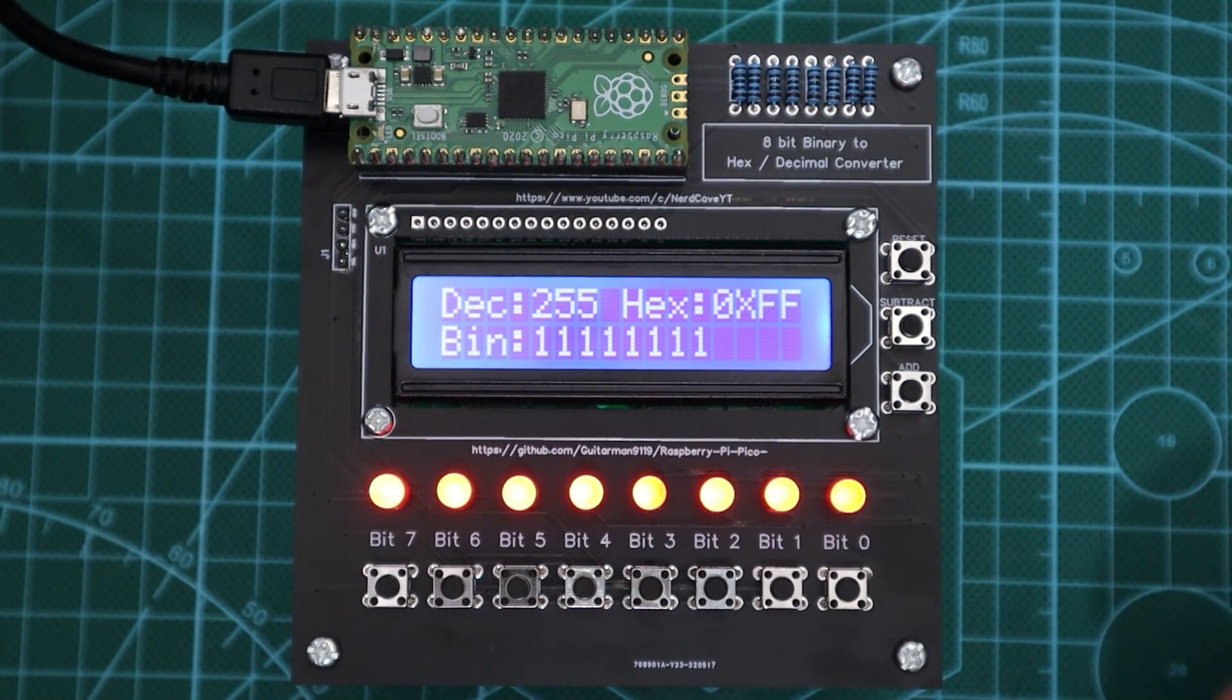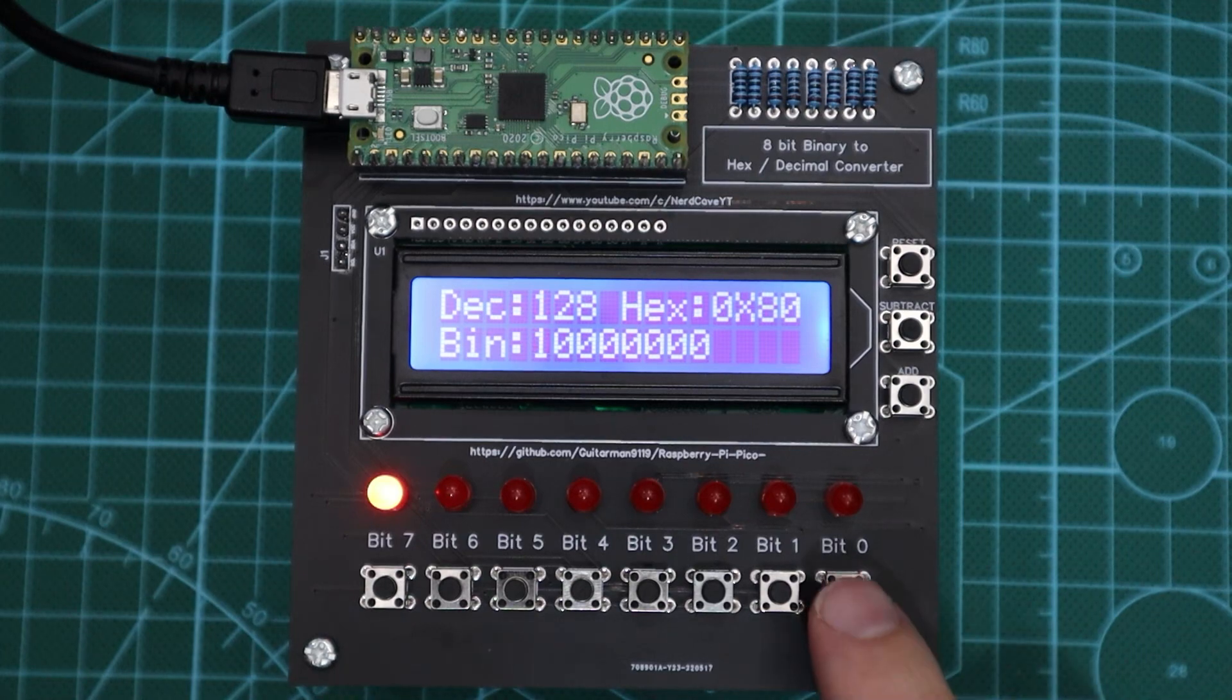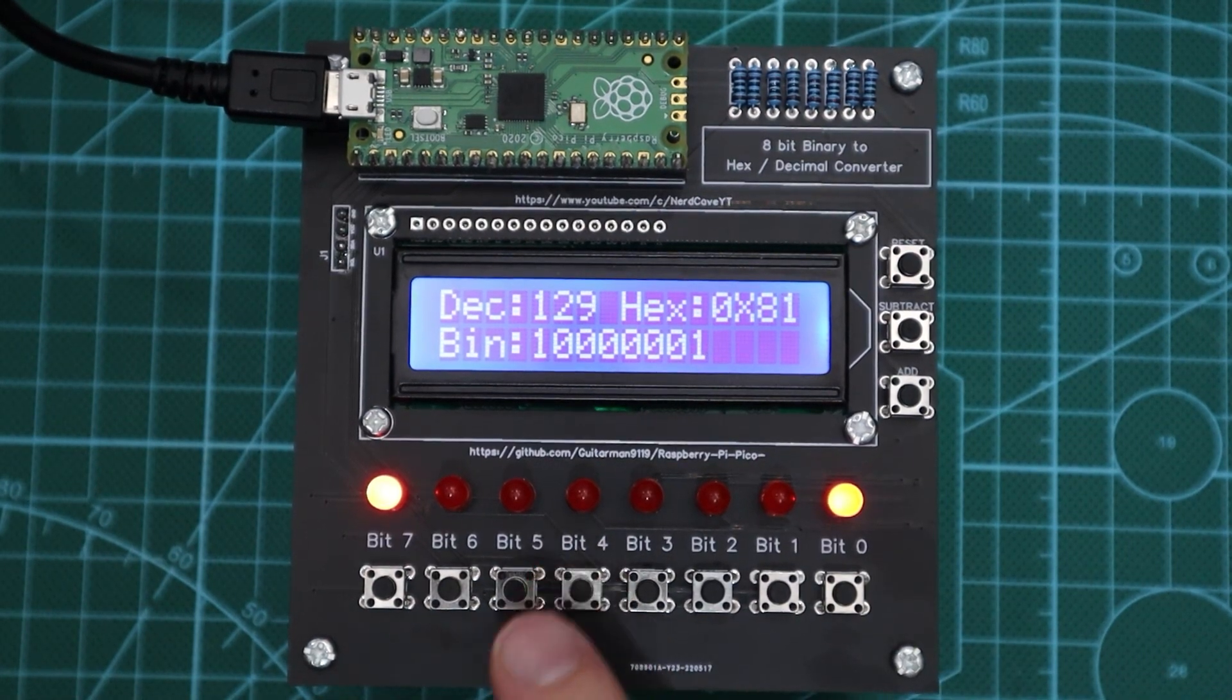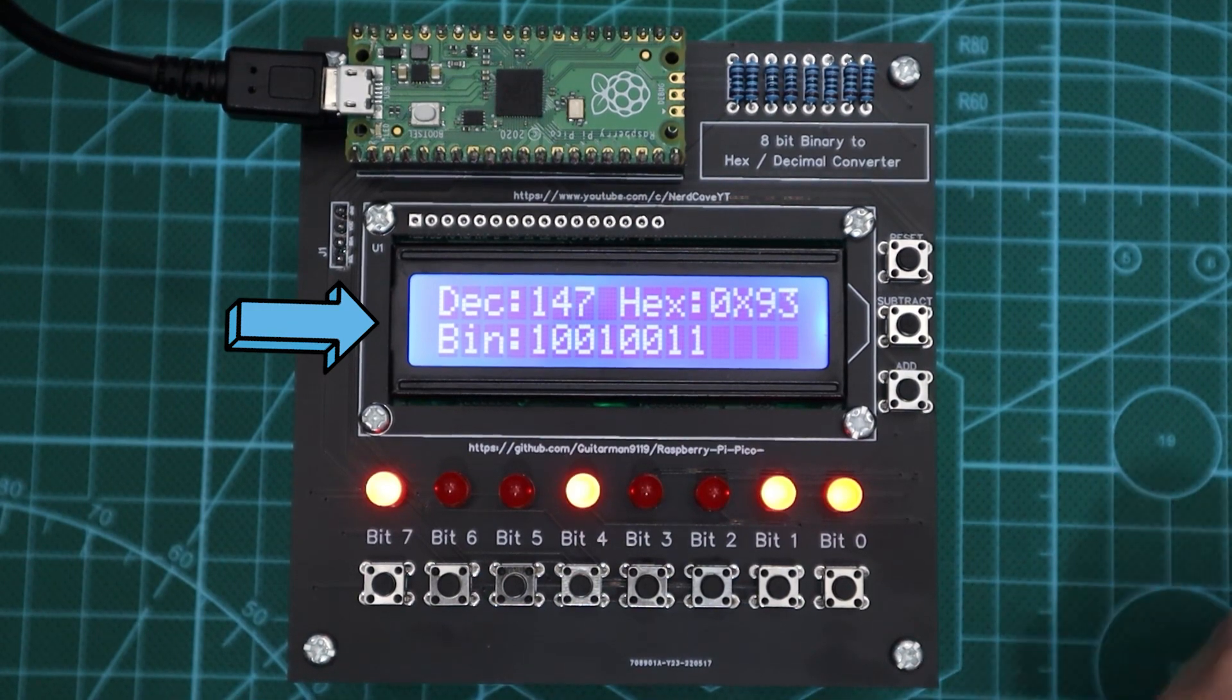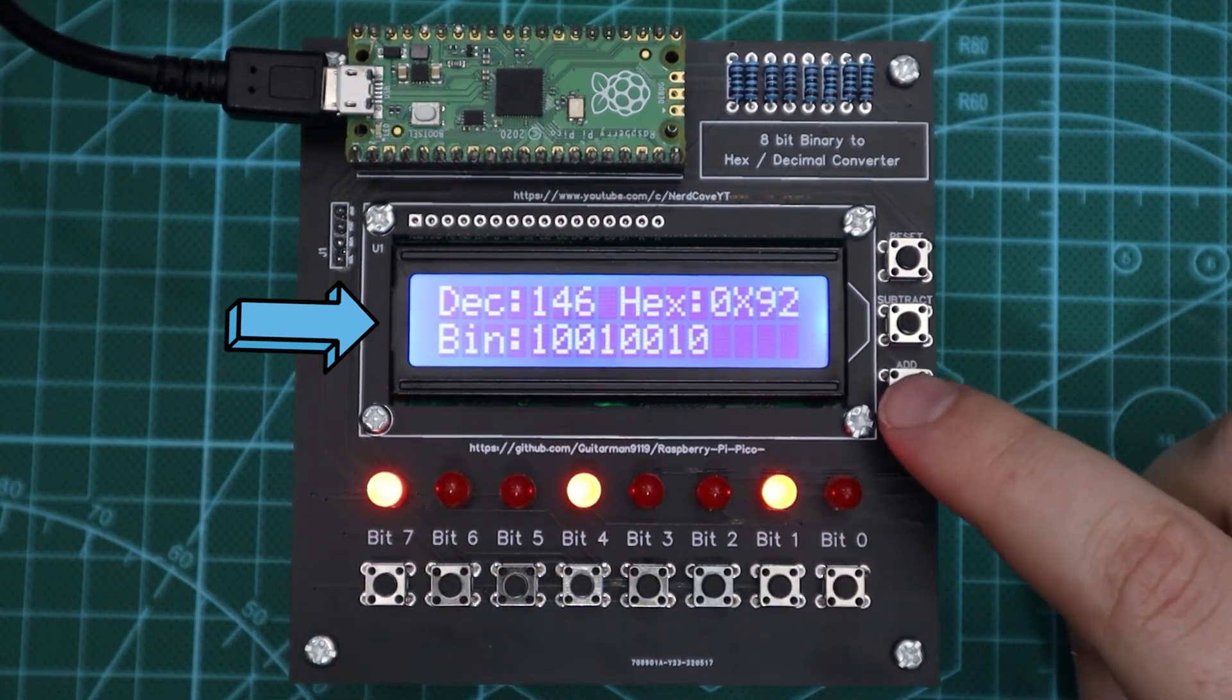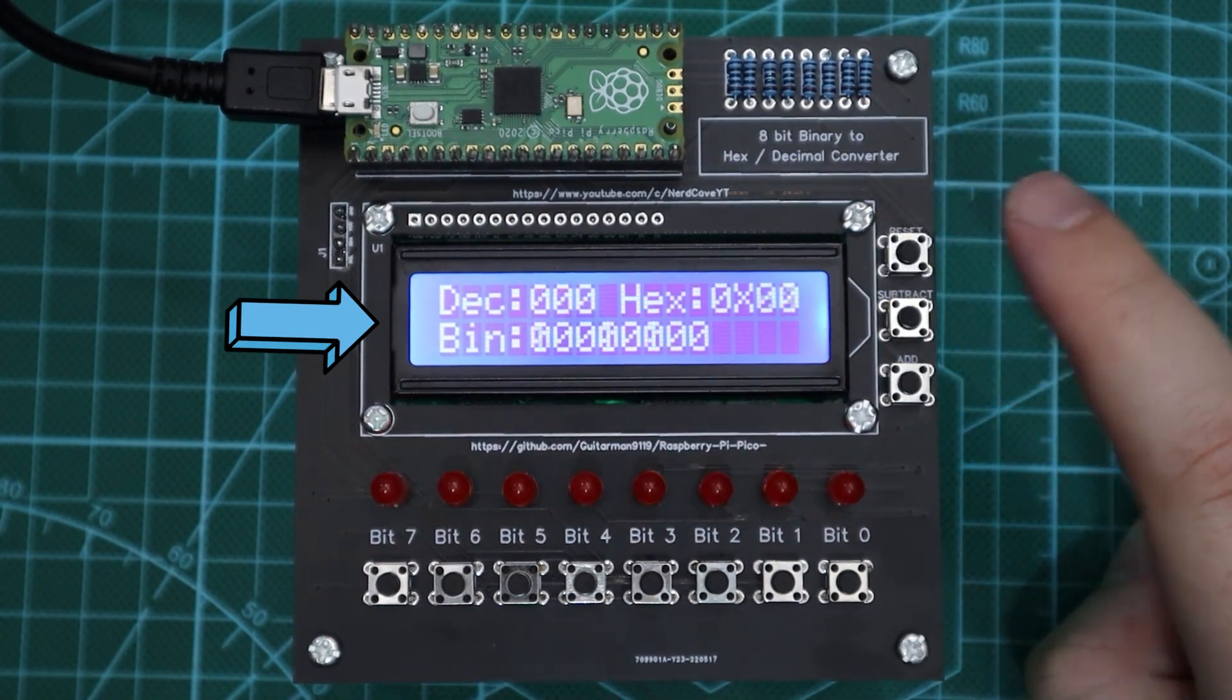The Pico will receive a denary number depending on the bit position set to 1 and convert it into binary and hexadecimal through some clever Python functions. The 16 by 2 character LCD will be used as output to indicate the result. The LCD will display the decimal, hexadecimal, and binary number.